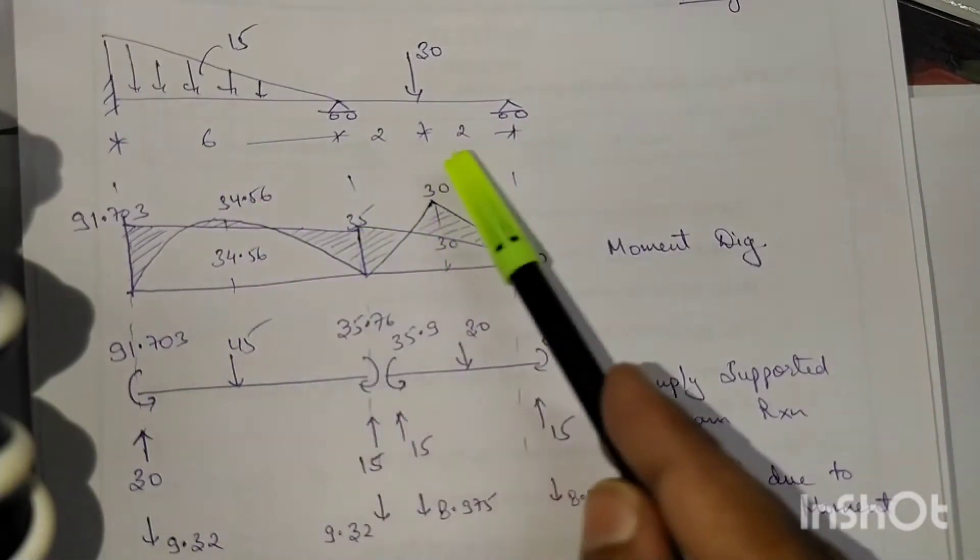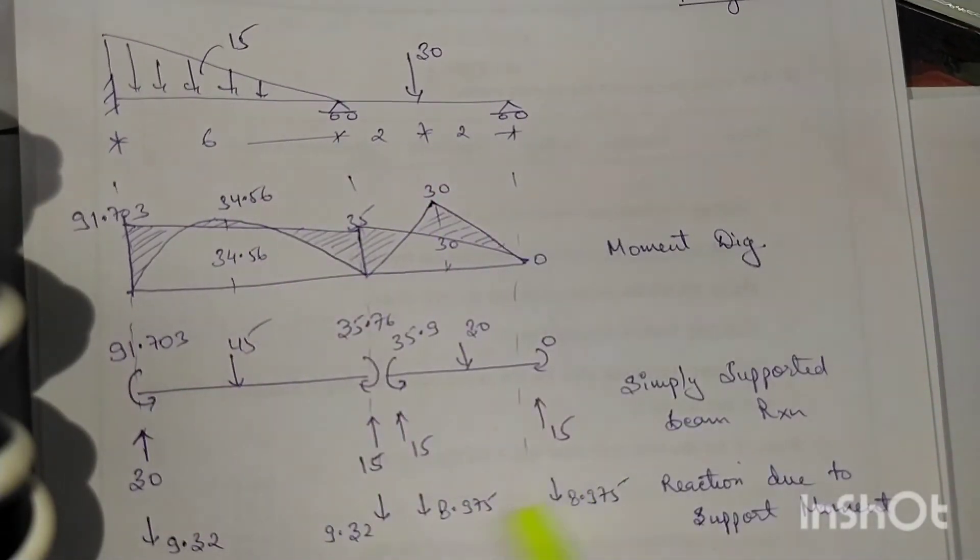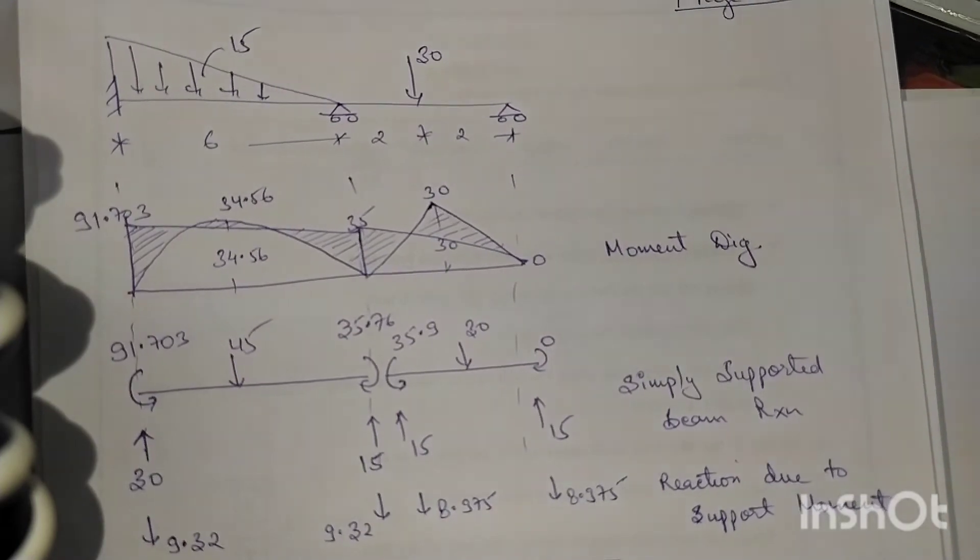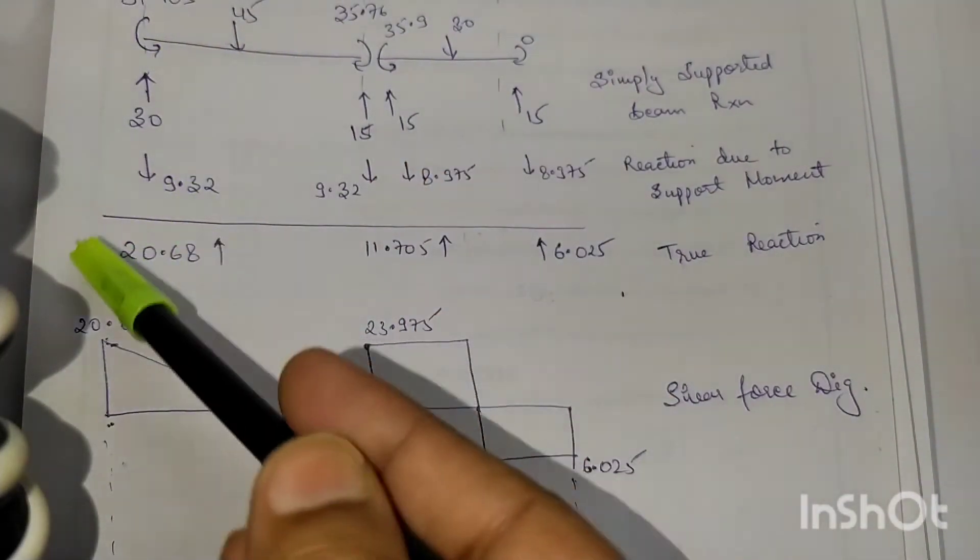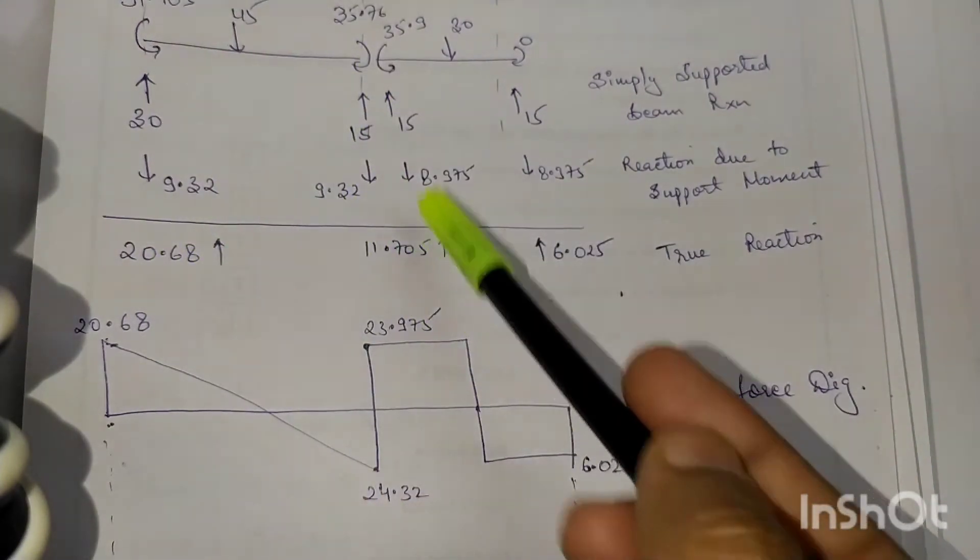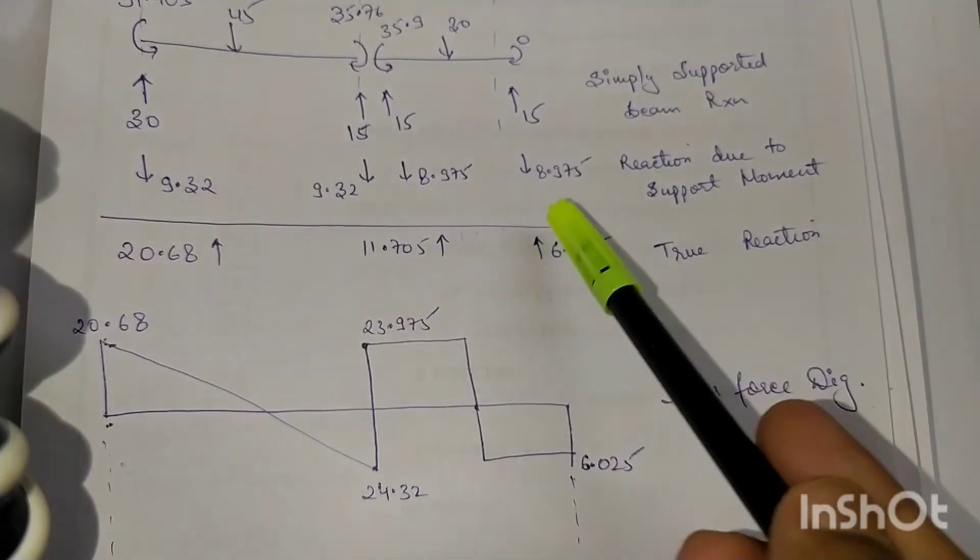Your simply supported reactions here. Next, what we have done: we have simply added. That is 30, it is going up, so positive minus 9.32, so we got 20. Like that we have substituted all the reactions.